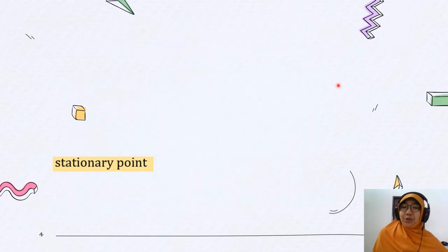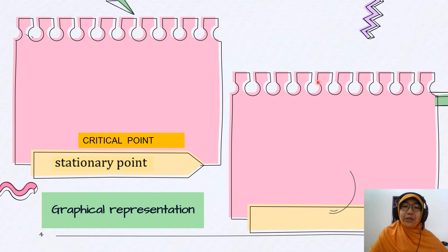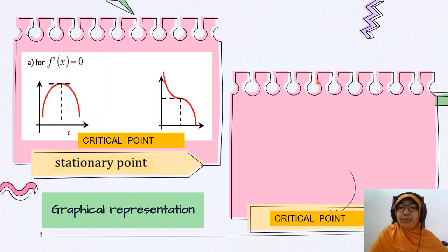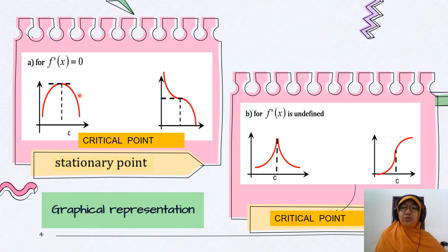Let us look at the graphical representation to see stationary points more clearly. Remember, critical points have two conditions: where f'(x) equals zero, and where f'(x) is undefined. Notice that when f'(x) equals zero, the tangent is horizontal. This illustrates f'(x) = 0. Whereas when f'(x) is undefined, the tangent is vertical.